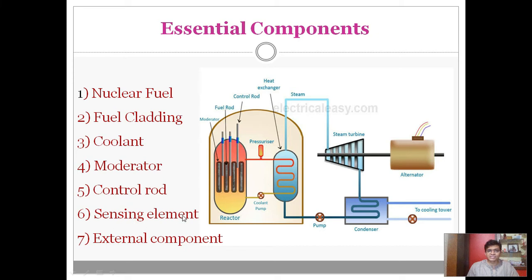Sensing elements are used to control the process. A thermal sensor monitors the temperature of the core reactor, because it should not cross a certain limit. If it crosses that limit, it will result in an explosion — that is what happened in Fukushima. The circulation of cooling water is monitored by a pump.